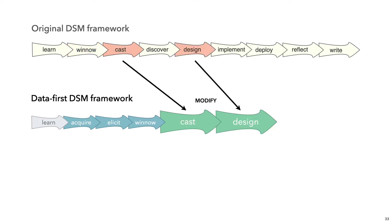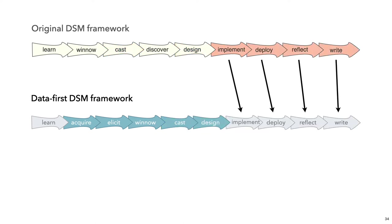Some nuances differ in the cast stage, where the goal is to identify collaborator roles. Here it's important to distinguish between data producers and data consumers. The design stage is narrowed to cover only visual idioms and interactions, since the data abstraction takes place earlier in the acquire stage. The subsequent stages — implement, deploy, reflect, and write — remain mostly unchanged, with some small adjustments, for example to reflect and report on the peculiarities of this data-first process.